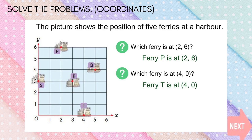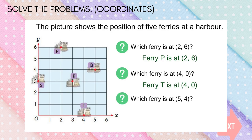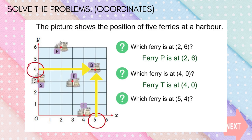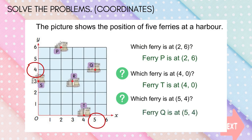Now, what ferry is at (5, 4)? The X axis equals 5 and the Y axis equals 4. From the X axis at 5, move up until Y is 4. So ferry Q is at (5, 4).